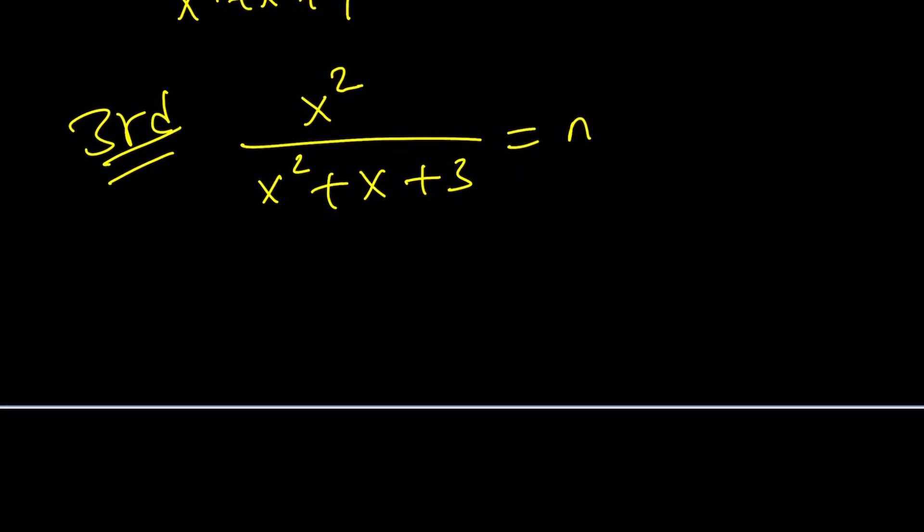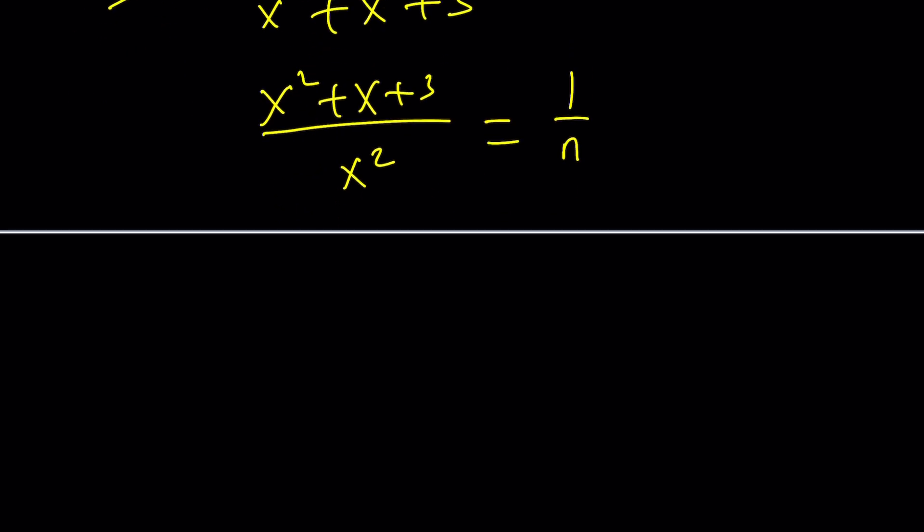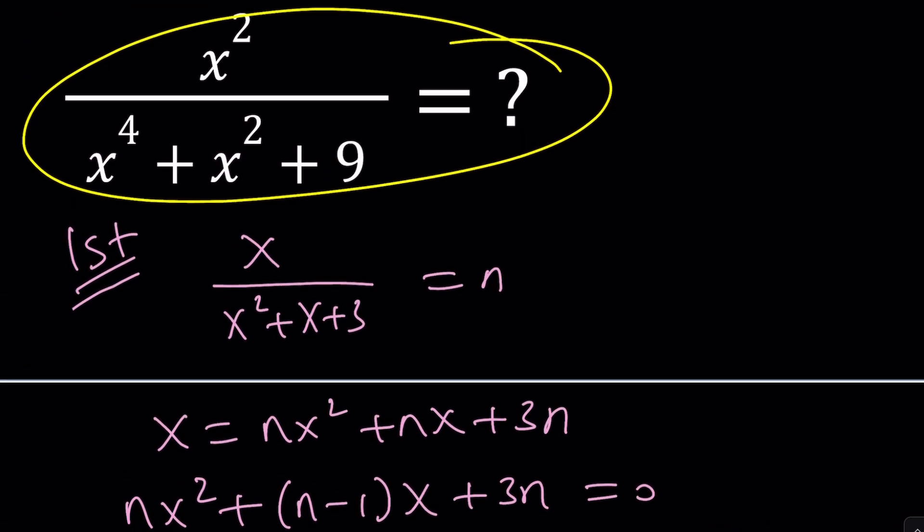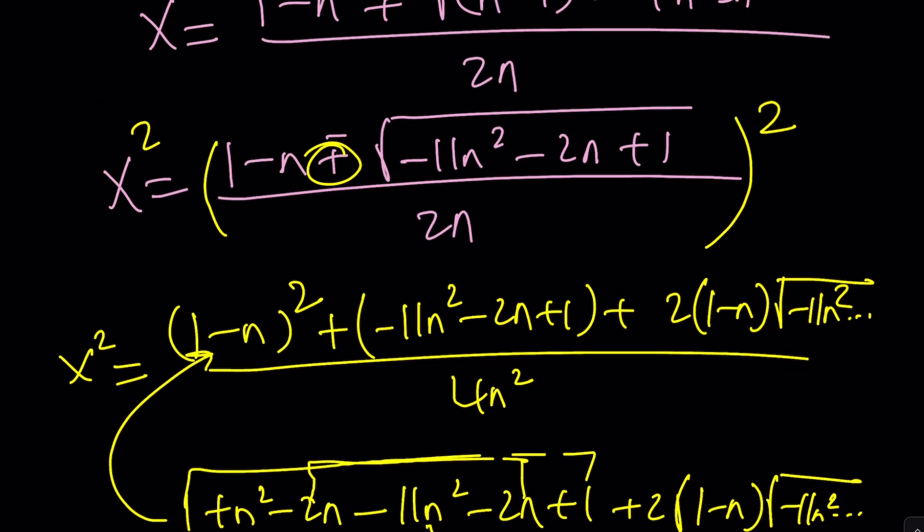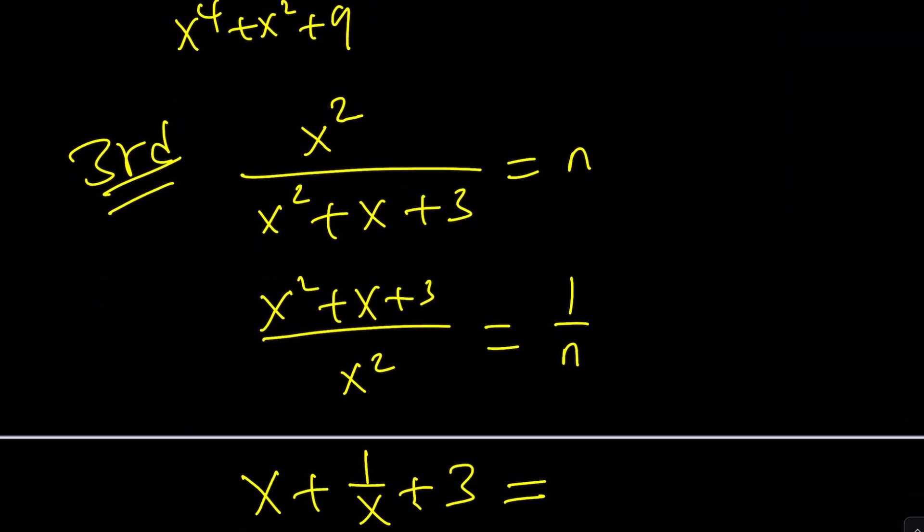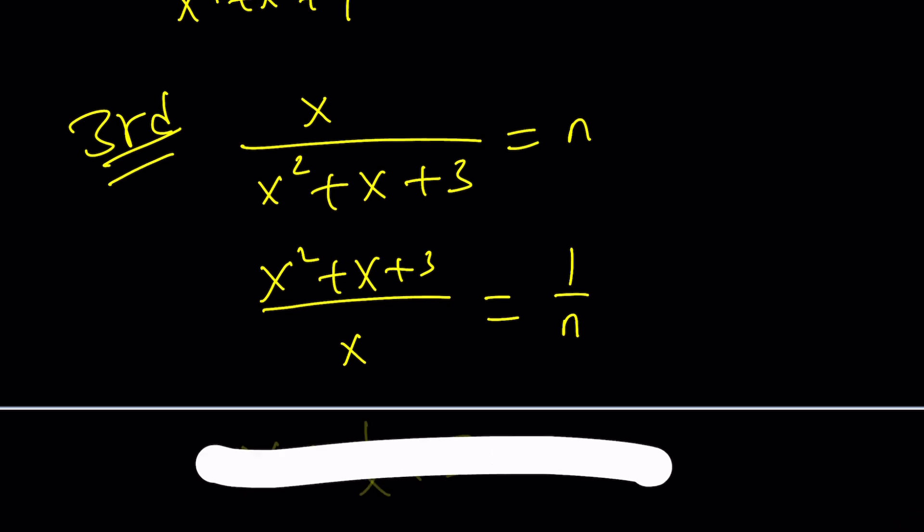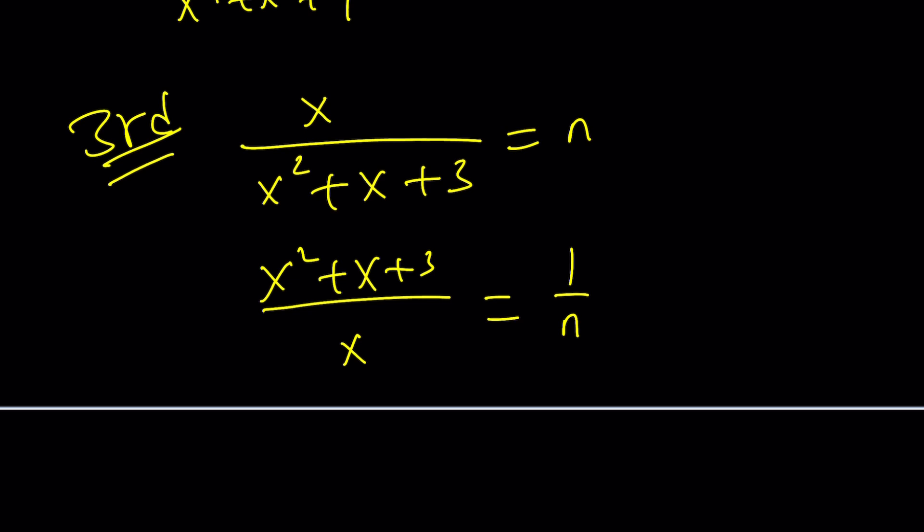This is equal to n, we're going to go ahead and flip both sides. Why? You'll see. Split it up. By the way let me make sure I write this original expression correctly. Sorry the top should be an x not x squared. Top should be an x so let's fix it real quick.